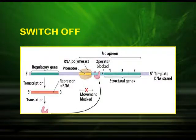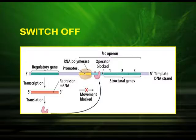The regulation of gene expression in lac operon takes place in two conditions. The first is the switch-off condition — when the operon is switched off, the structural genes are not transcribed. In this condition, the regulator gene produces a repressor protein. The repressor protein binds at the operator site and prevents the function of RNA polymerase, so the three structural genes are not transcribed. This condition is called switch off.